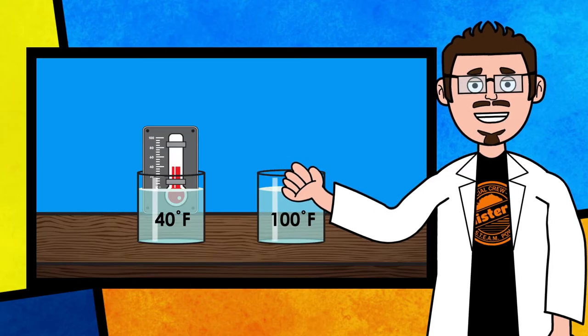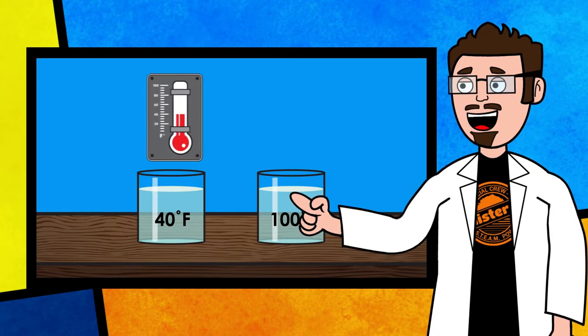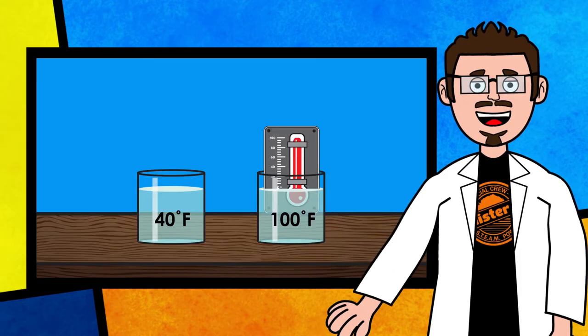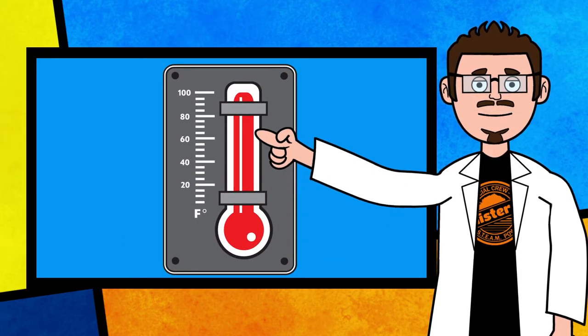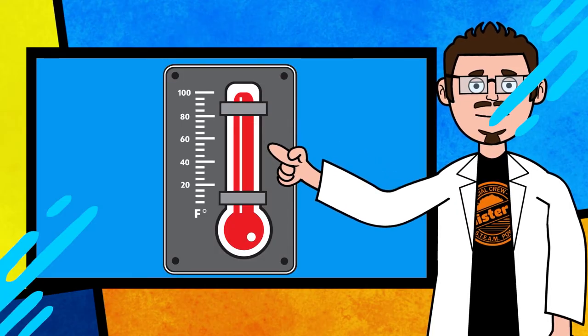If you place the thermometer into a warm cup of water, the liquid expands and rises. This is because of thermal expansion. The markings on the thermometer allow us to accurately determine the temperature of an object.